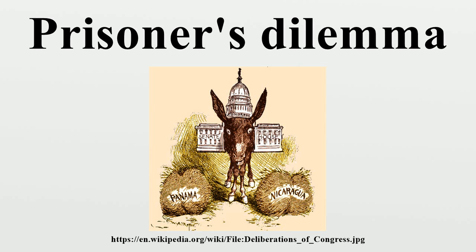Strategy for the Prisoner's Dilemma: both cannot communicate — they are separated in two individual rooms. The normal game is shown below. Here, regardless of what the other decides, each prisoner gets a higher reward by betraying the other. The reasoning involves an argument by dilemma.